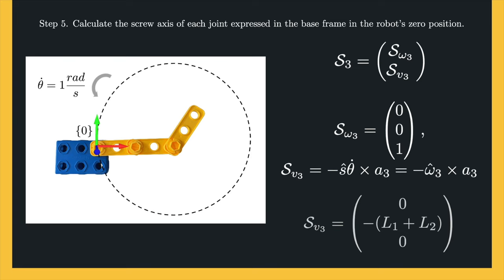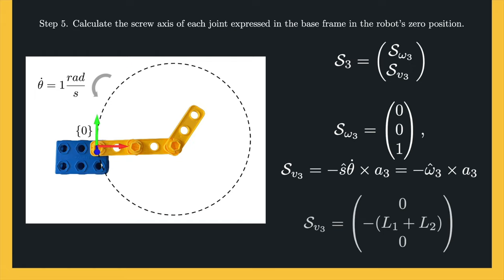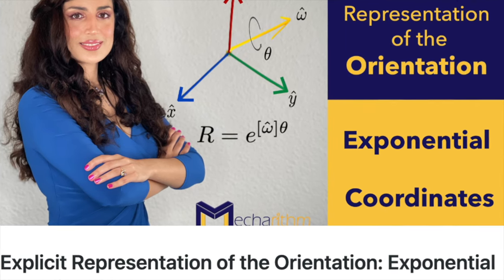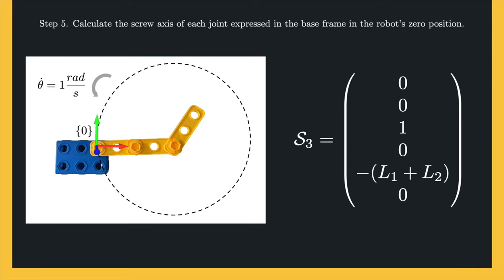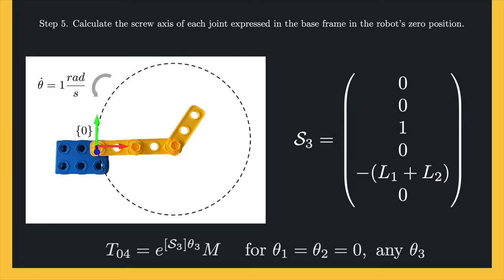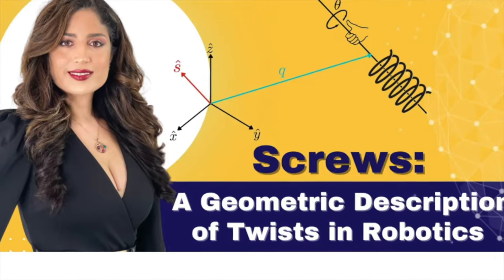This is also expected from the circular motion of the origin of joint 3, and the fact that linear velocity is tangent to the circular path. To learn more, please refer to the exponential coordinates lesson. Therefore, the screw axis of joint 3 can be written by stacking up the angular part and the linear part in one vector. Considering only the screw motion about the third joint, we can write the configuration of the end effector in the base frame as a transformation matrix. The bracket notation shows the little se(3) matrix form of the screw axis, as covered in the screws and robotics lesson.